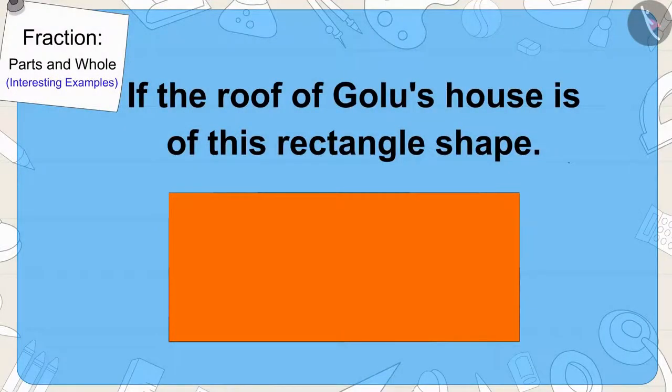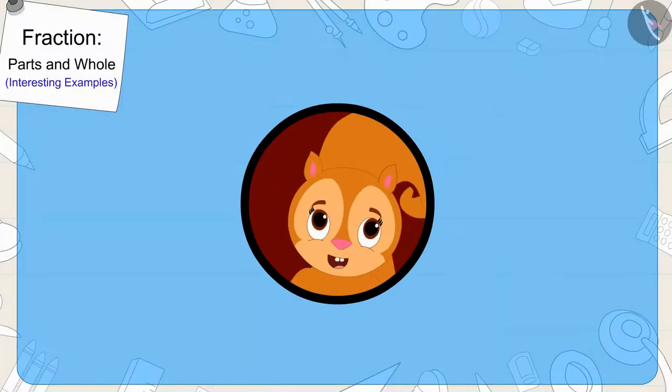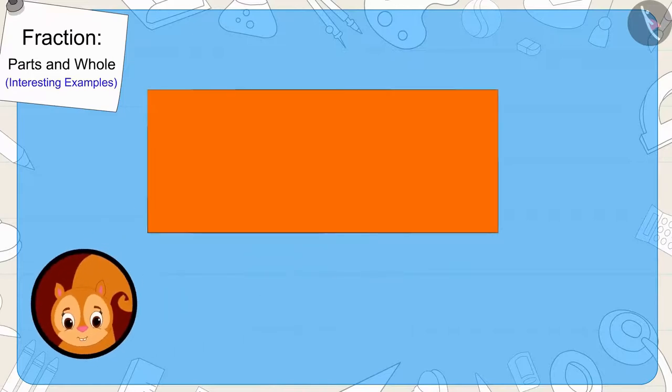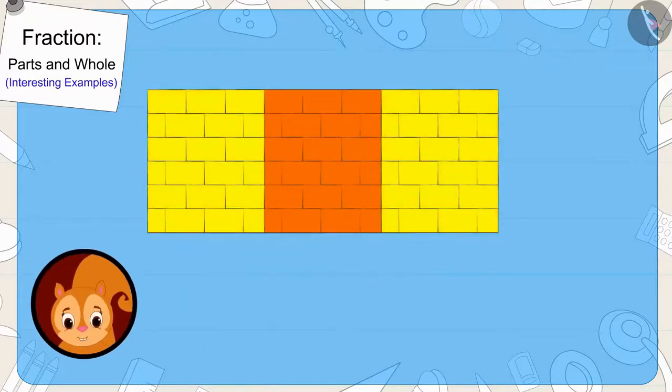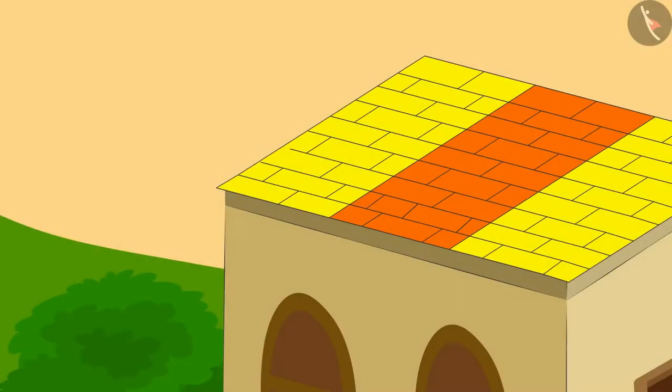If the roof of Golu house is of this shape, then can you divide it into three equal parts and fill yellow color in two-thirds of it? If you wish to, you can find the answer by pausing the video. Well done, children. In this way, we can fill yellow color in two-thirds of the roof.